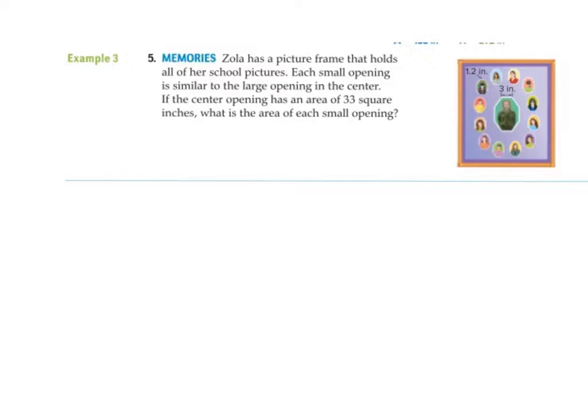But let's have a look at question five. So what we've got here: it says Zola has a picture frame that holds all her school photographs. Each small opening is similar to the large one. If the center opening has an area of 33 square inches, what is the area of the small openings? It doesn't matter how many pictures there are. We're only interested in the two pictures in ratio and proportion. The center has been given you as the area of 33. So now we're actually going back to what we did right at the beginning. Purely and simply, the first thing we need to do is find out what the scale factor is. So you're going to do three over 1.2, and if you put that into your calculator using the fraction button, that will simplify down to five over two.